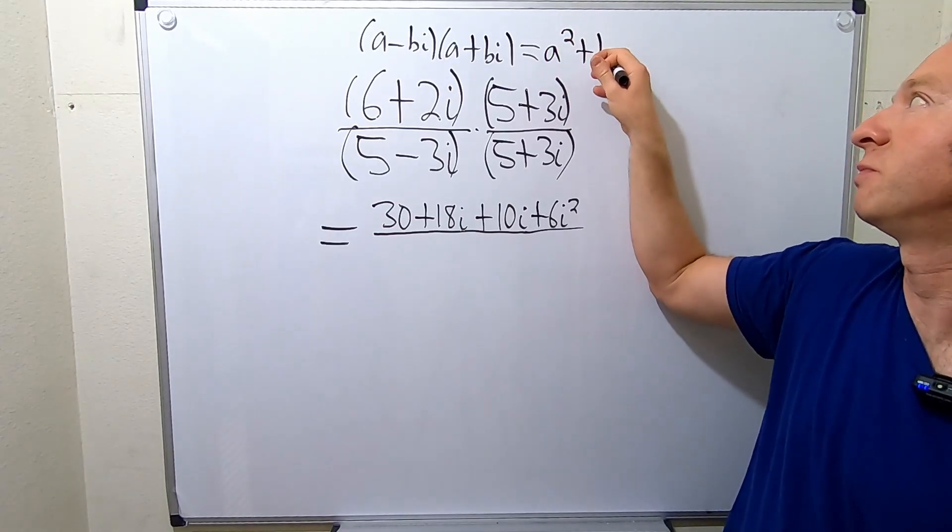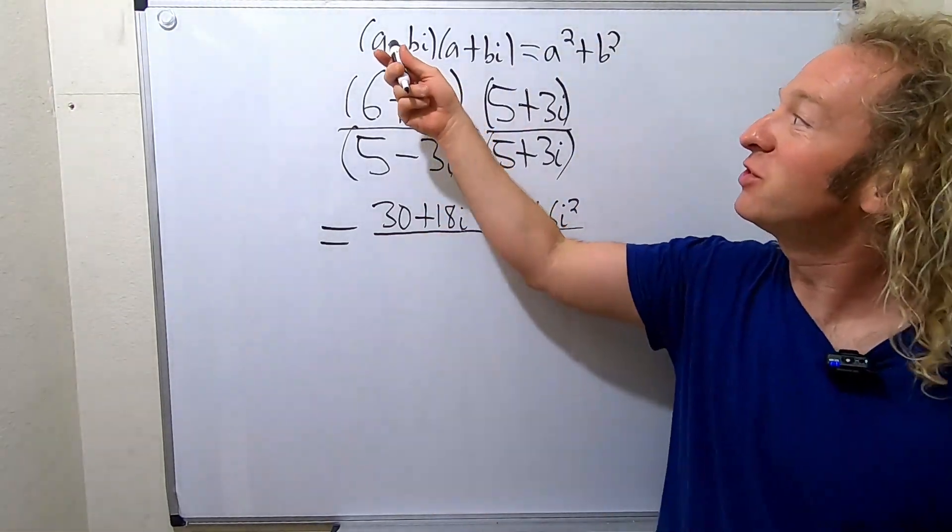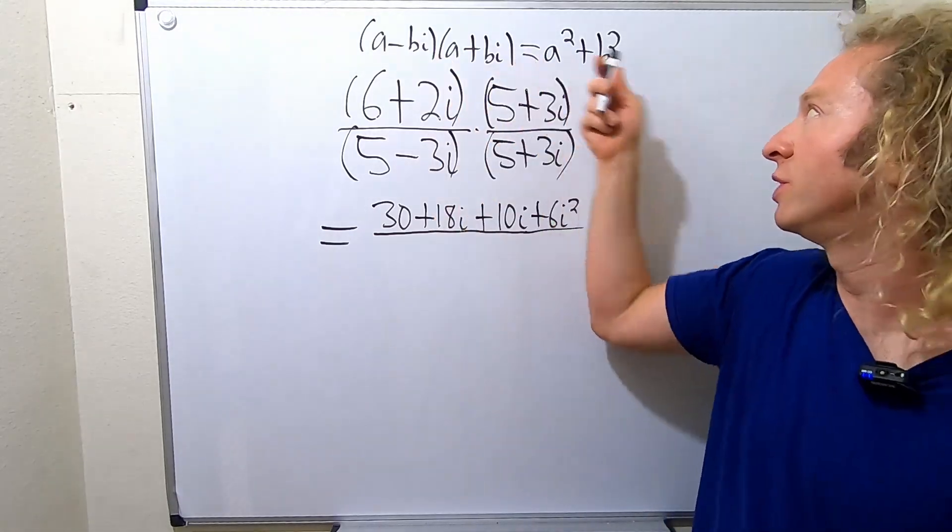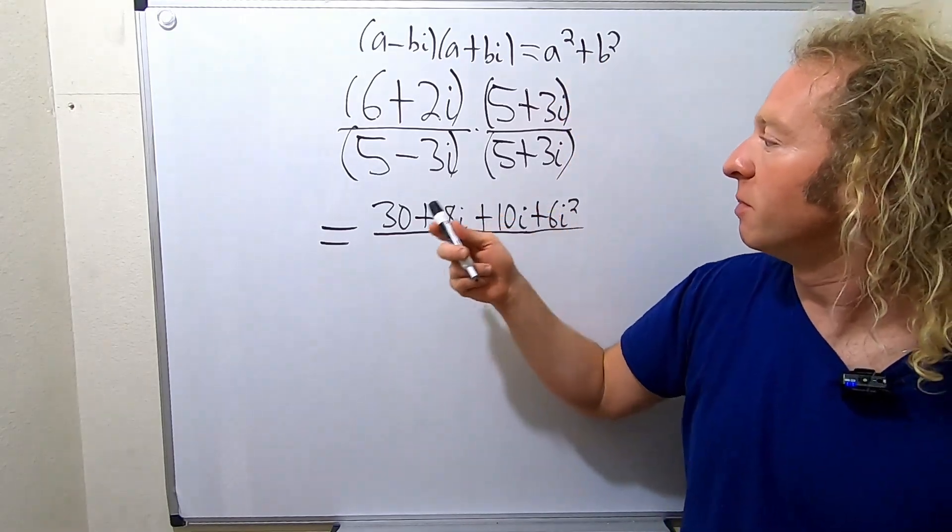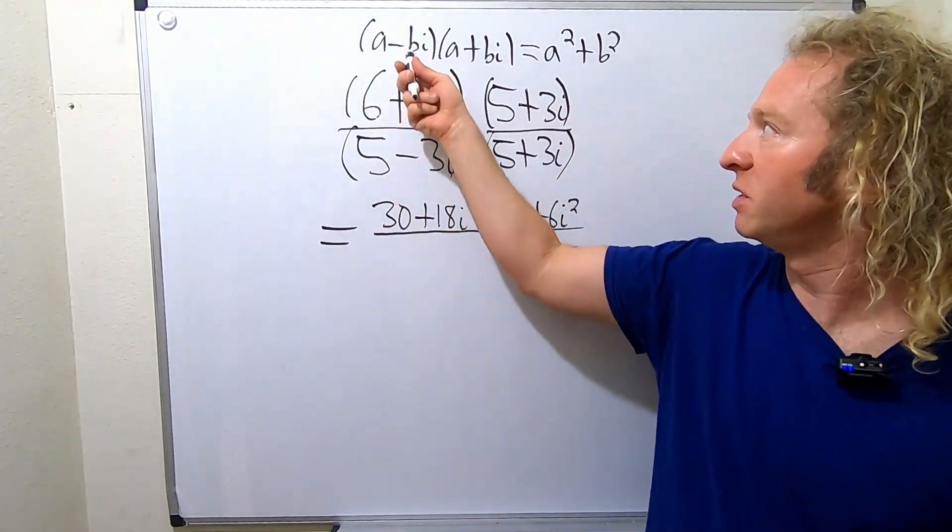A squared, sorry, a squared plus b squared. If it was just a minus b and a plus b, then you would get a squared minus b squared. But because you have the i's, it turns into a plus. So basically here, the a is 5 and the b is 3.